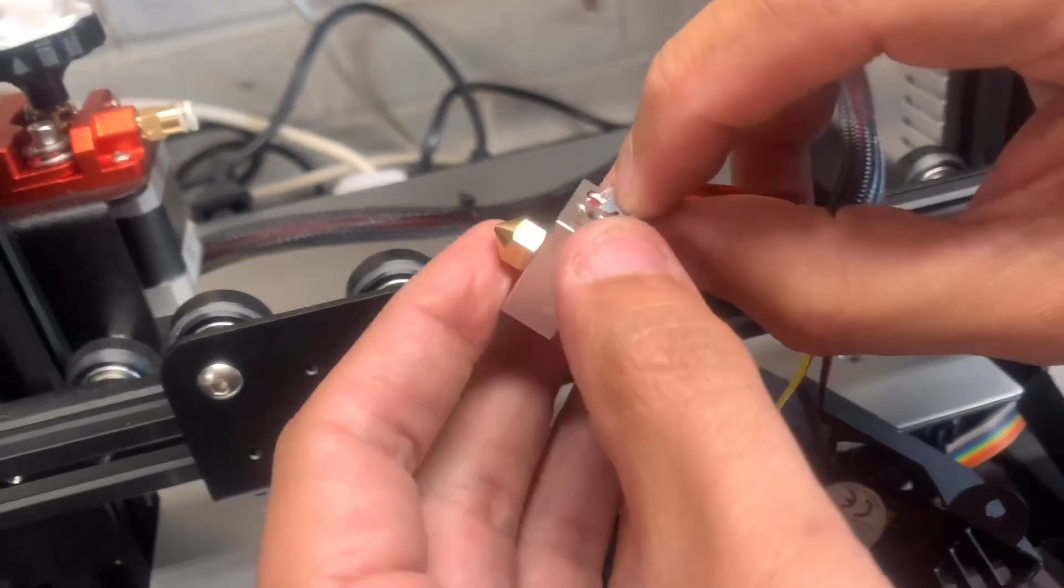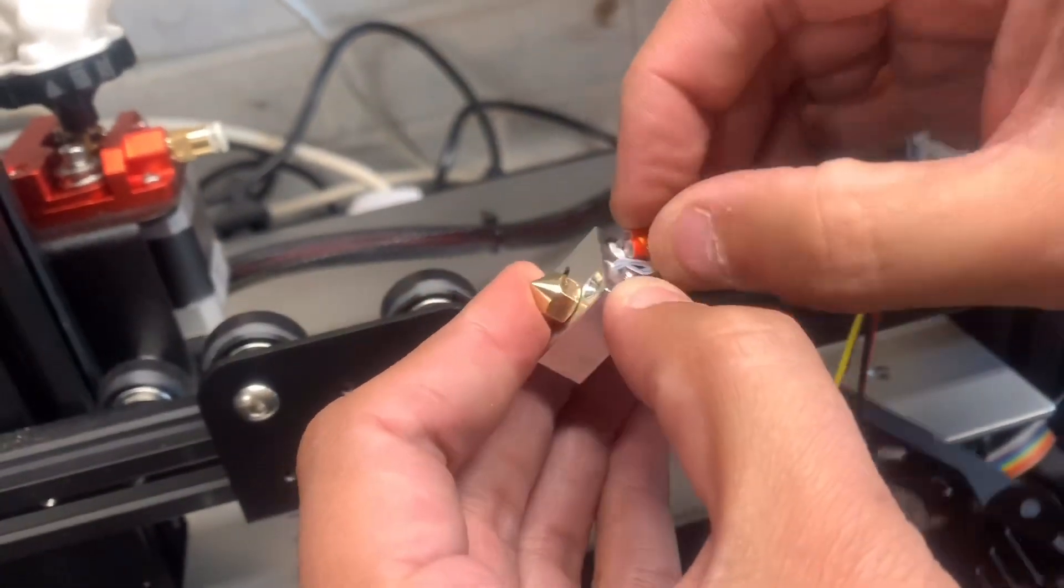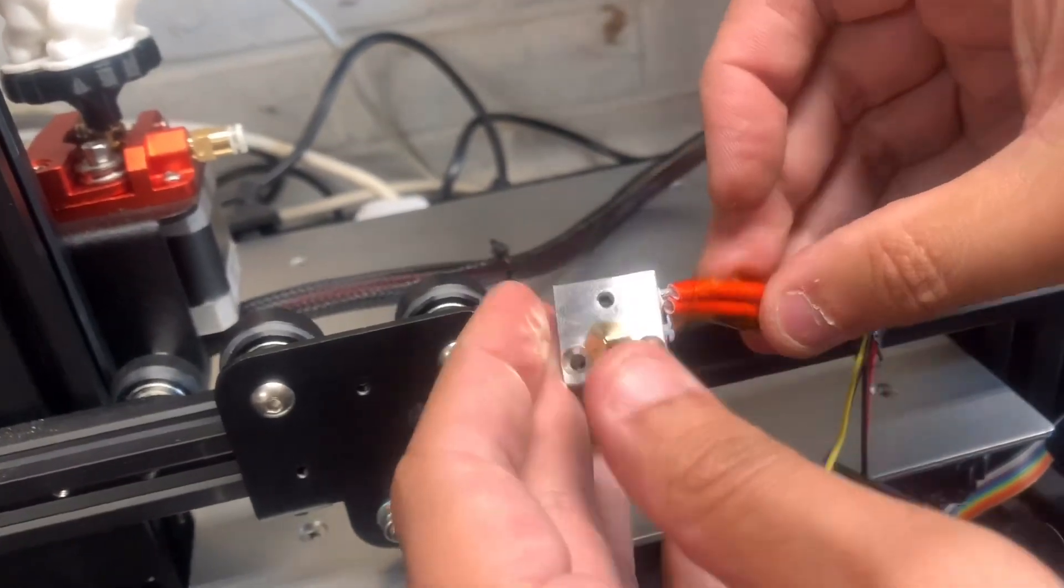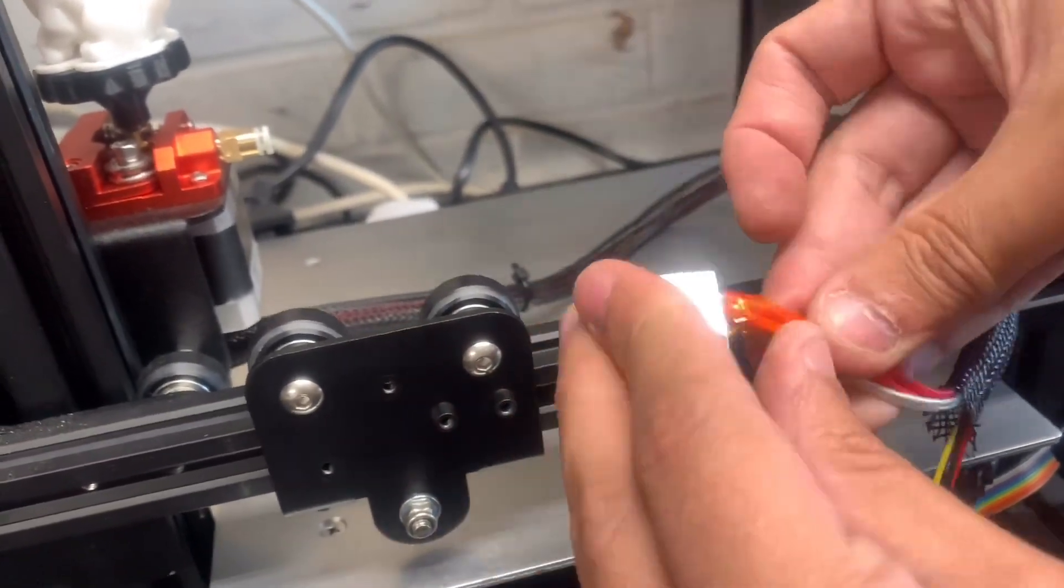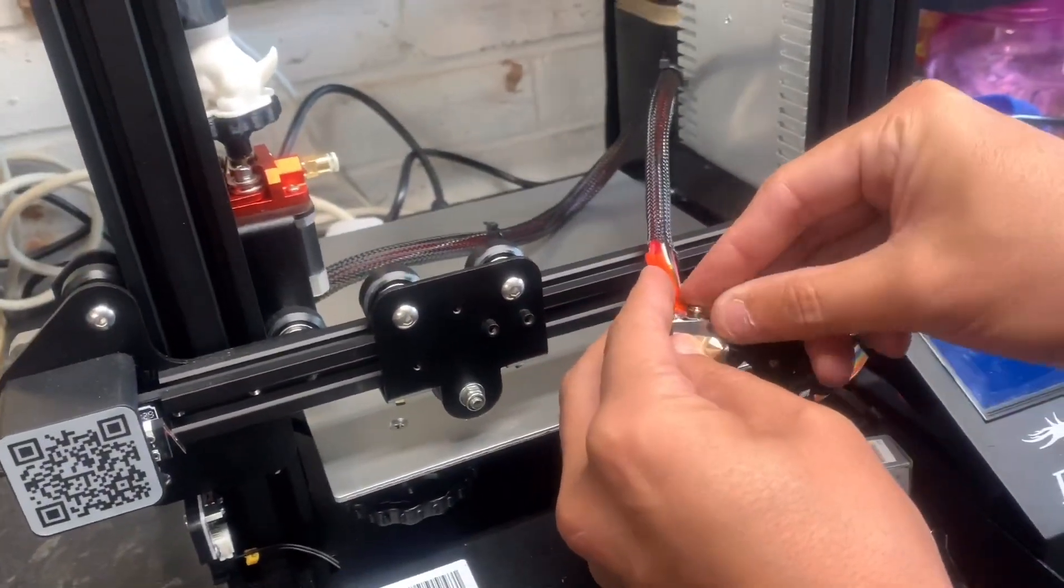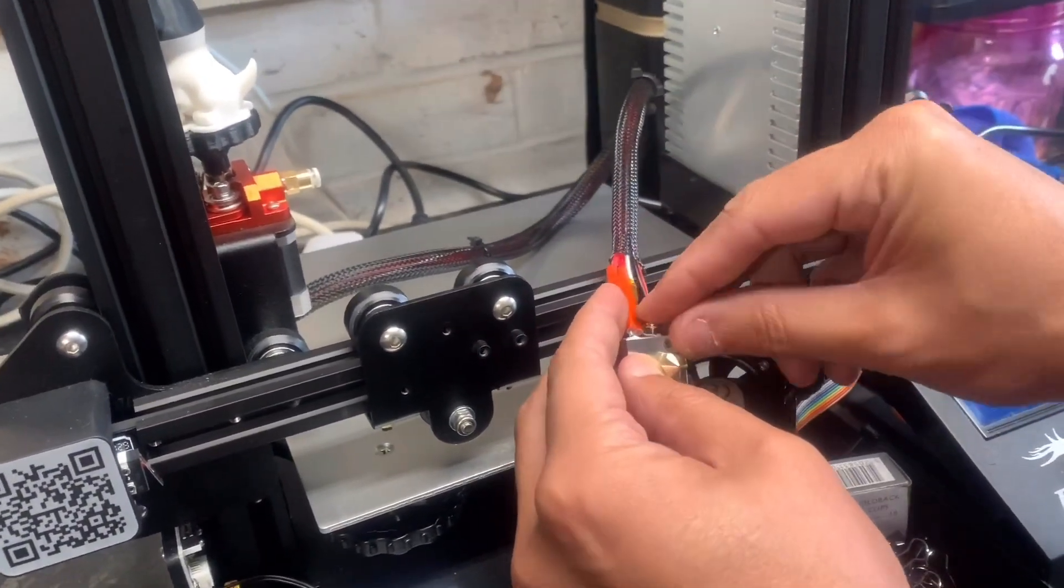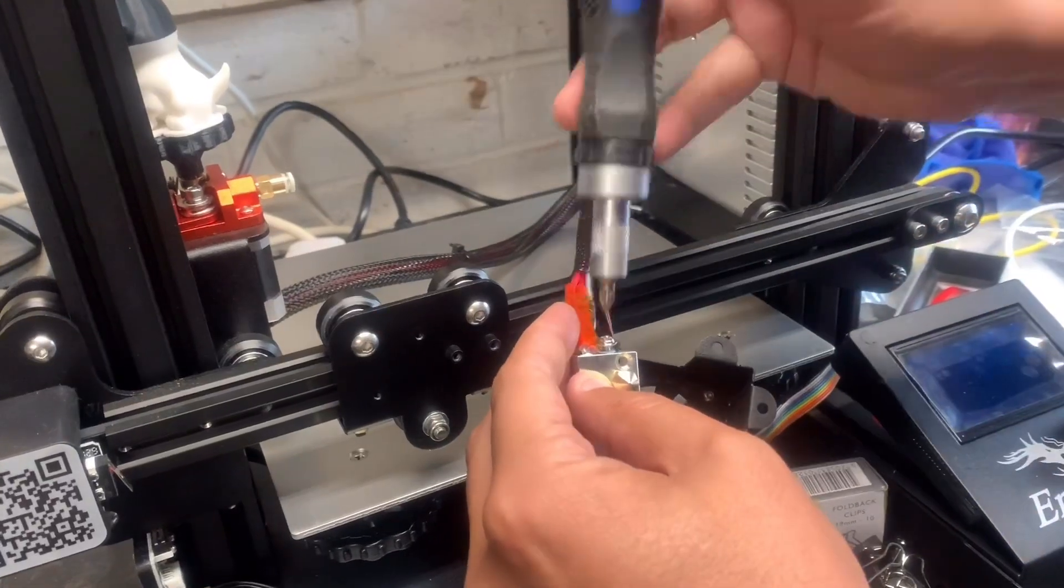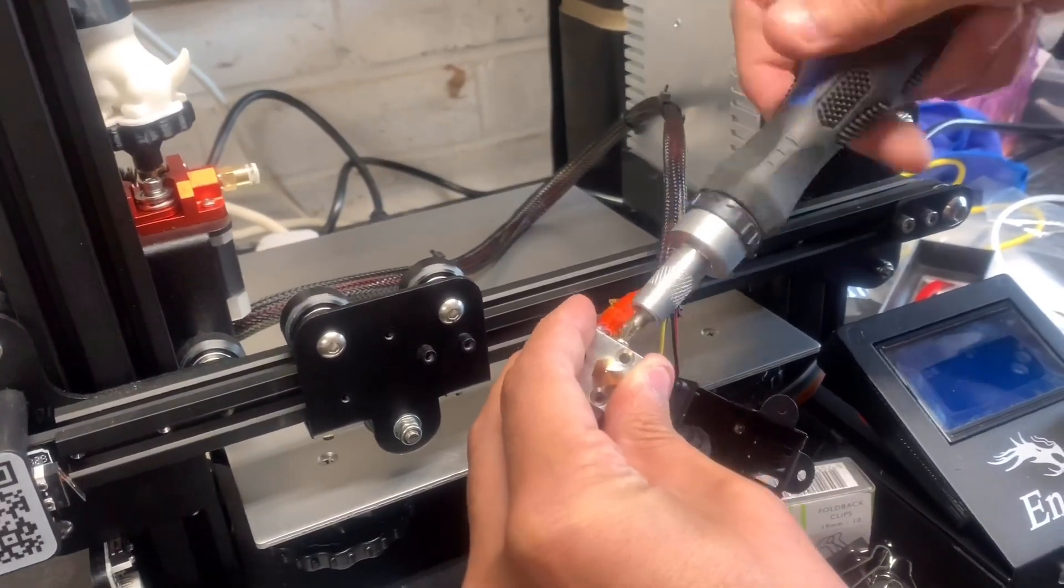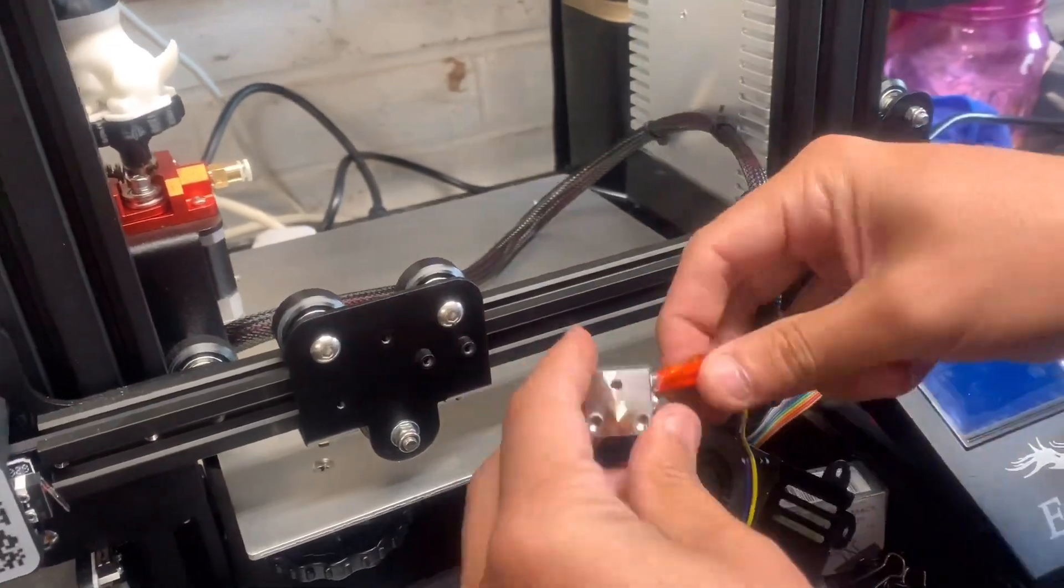And then what you need to do is get your thermistor and put it in the hole. And then get your screwdriver and your screw and just screw that in.